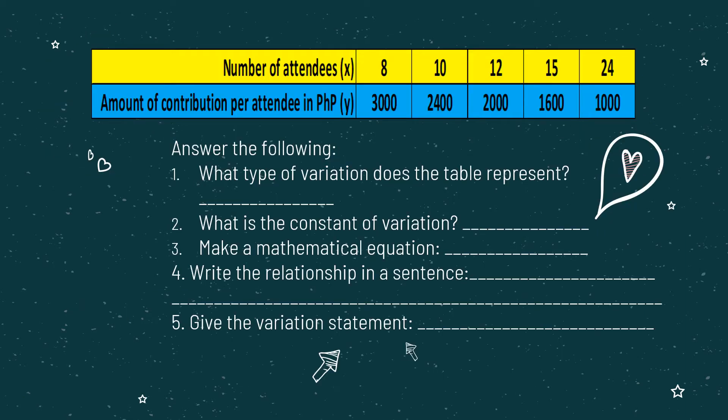Based on the table of values that represents the given situation, let us answer the following questions. The first one: what type of variation does the table represent? As you can see on the table, for the number of attendees represented by variable X, the values are 8, 10, 12, 15,